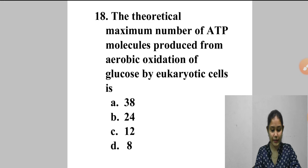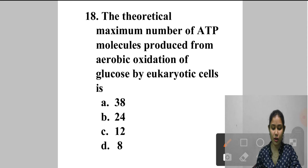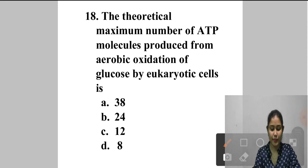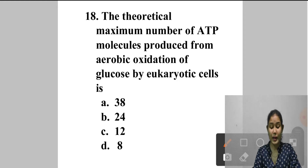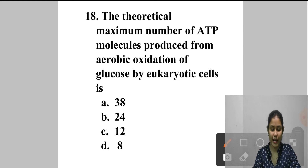Question 18: The theoretical maximum number of ATP molecules produced from aerobic oxidation of glucose by eukaryotic cells is — A. 38, B. 24, C. 12, D. 8. The maximum number of ATP molecules produced by glucose during aerobic oxidation in a eukaryotic cell is 38 ATP. Answer is option A.